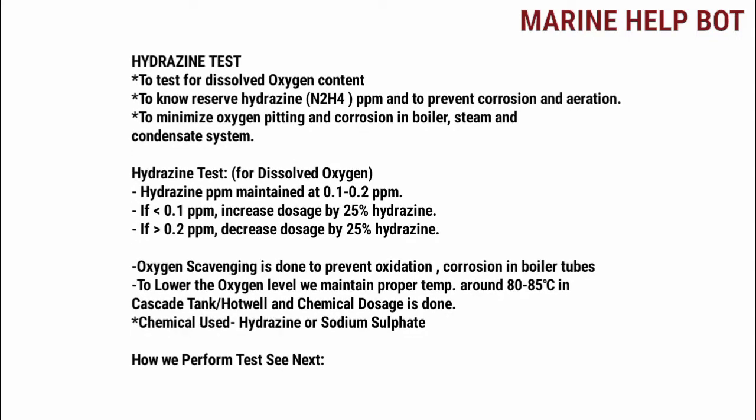Here I explain why we do this test, what levels we maintain, and the chemicals used for dosage. To lower the oxygen level, we maintain proper temperature around 8 to 25 degrees in the cascade tank, and we also use chemicals for water treatment.